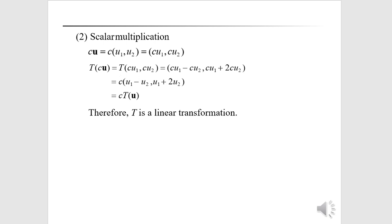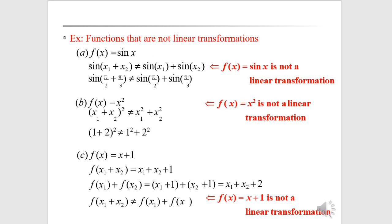For scalar multiplication, similar to the vector addition axiom, we compute T(cu) = T(cu₁, cu₂), and from the definition of the linear transformation we get c·T(u), confirming the second axiom holds.